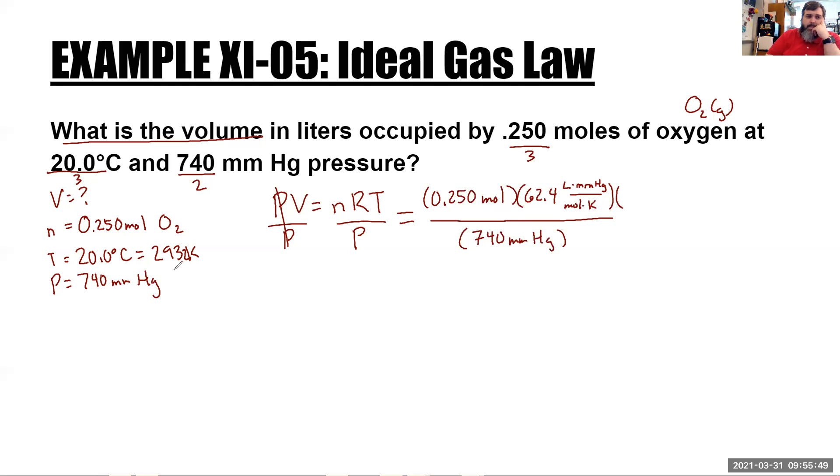And then finally, we have a temperature. So what was our temperature? It was 20, but we wrote out 293.2. And that is in Kelvins. All right. So there's our moles. There's our R value. There's our temperature. There's our pressure. There's our three things. We did the three plus the unknown.